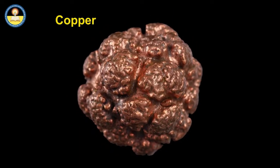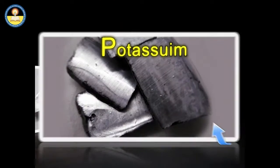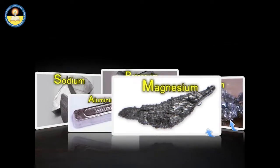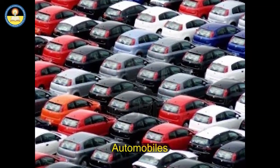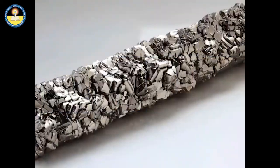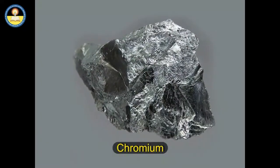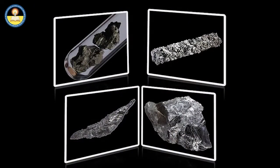Copper was the first metal to be used in making utensils and weapons. Metals have a significant role to play in our daily life. They are employed for construction of bridges, automobiles, ships, trains, buildings, etc. Metals like titanium, chromium, manganese, and zirconium find application in manufacture of defence equipment because they are light, can withstand wear and tear, and are not corroded if kept in air for a long time. These are called strategic metals.